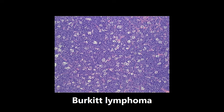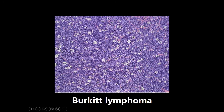This next image is Burkitt lymphoma — the classic starry sky appearance, where the stars are macrophages. Burkitt lymphoma is extremely high yield for boards. Key points: there is overamplification of the oncogene c-myc (remembered as 'Burk-myc lymphoma' from Pathoma). The translocation is chromosome 8 and chromosome 14. Additionally, it is associated with Epstein-Barr virus — one of the most important EBV-associated conditions to know.